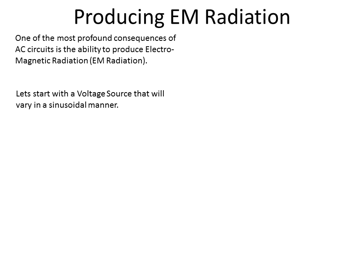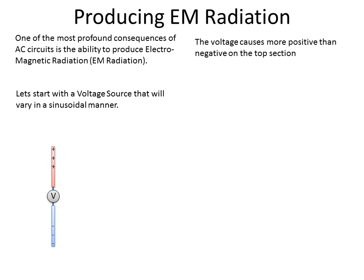Let's see how this works. One of the ways we can do this is to start with a voltage source that varies in a sinusoidal manner — a traditional AC voltage source — connected to two antennae. When the voltage source is in one configuration, it causes more positive charges to be on one side and negative charges on the other, setting up an electric field pointing in the downward direction.